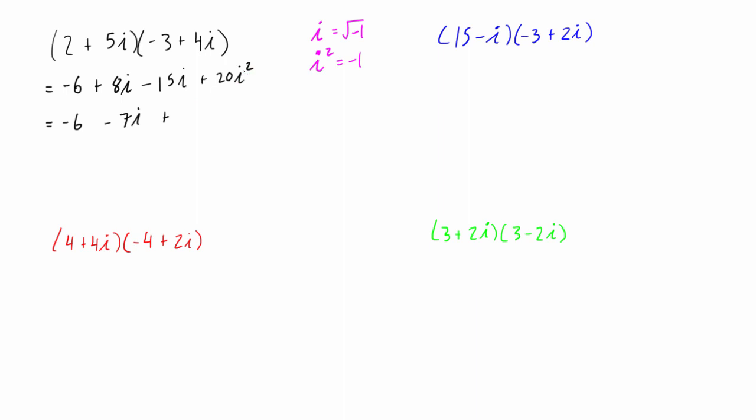And then we have plus 20 times i squared, so 20 times negative 1. So we just want to combine this with the negative 6, so we only have one real part to this complex number. We have negative 6 minus 20, so that's negative 26 minus 7i. And that is the answer for the multiplication of these two original complex numbers.